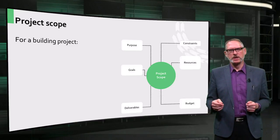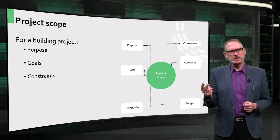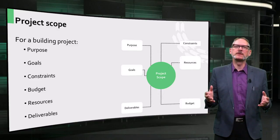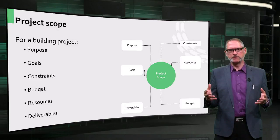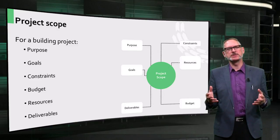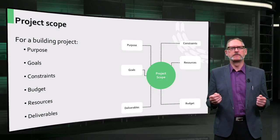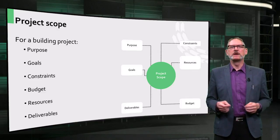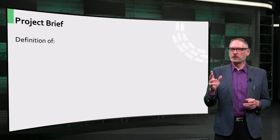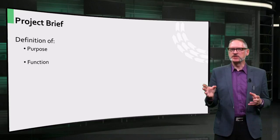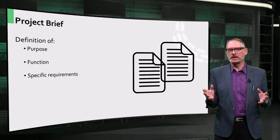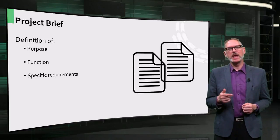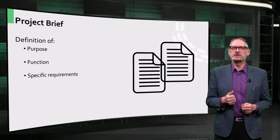Before anyone can go to work on a building, the purpose, the goals, constraints, budget, resources, and deliverables with which the building project can be realized must be outlined in a project scope. This scope document becomes the principal tool for ensuring that everyone in the project shares a common understanding of what is to be done. It also helps ensure that one does not get led astray or expand the project beyond its original purpose, a phenomenon called scope creep. As part of the scope, the purpose, the function, and the specific requirements of the building must be clearly outlined and detailed in a brief or a program of requirements. This sets out exactly what criteria the design and eventually the building itself must fulfill if the project is to be considered a success.